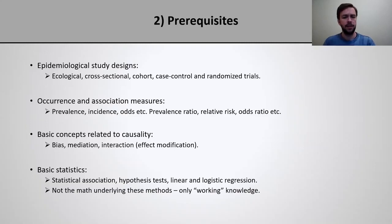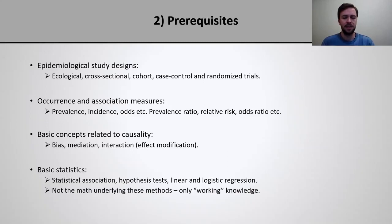I also expect you know about measures of occurrence and associations, such as prevalence, incidence, odds, as well as prevalence ratio, relative risk, odds ratio, etc. Prior understanding of basic concepts related to causality, such as what bias means, what is mediation, what is interaction and effect modification — not necessarily how to perform mediation or interaction analysis, but rather a conceptual understanding of what those concepts mean — will be useful.